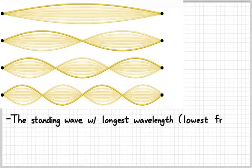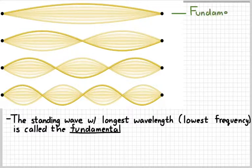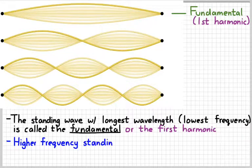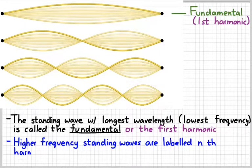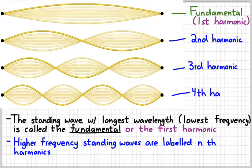The standing wave with the longest wavelength — the top one — is referred to as the fundamental, or the first harmonic. Higher-frequency waves with shorter wavelengths are labeled by their n number as the nth harmonic. So the second one down is the second harmonic, the next is the third harmonic, the next is the fourth harmonic. We need to know those terms and be able to draw the standing wave given the harmonic number.